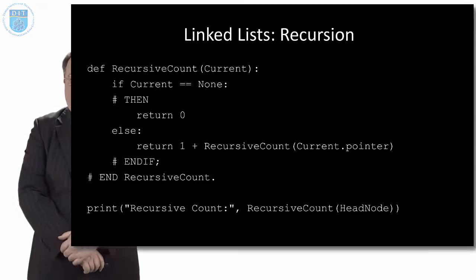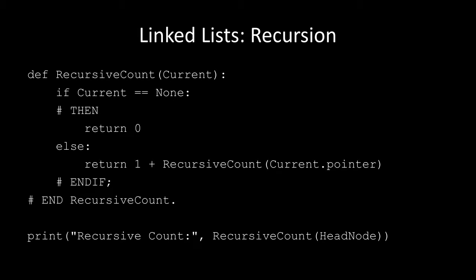Looking at the code in more detail: recursive_count — if there's nothing in the list, just return zero. Otherwise, keep adding 1 to recursive_count of the next element in the list, until current points to zero and we've reached the end. We're adding 1 for each node in the list. This gets rid of having to have a loop — we just keep recursively calling the same program. When current equals zero, we return zero, but it will be plus 1 plus 1 plus 1 for each node.